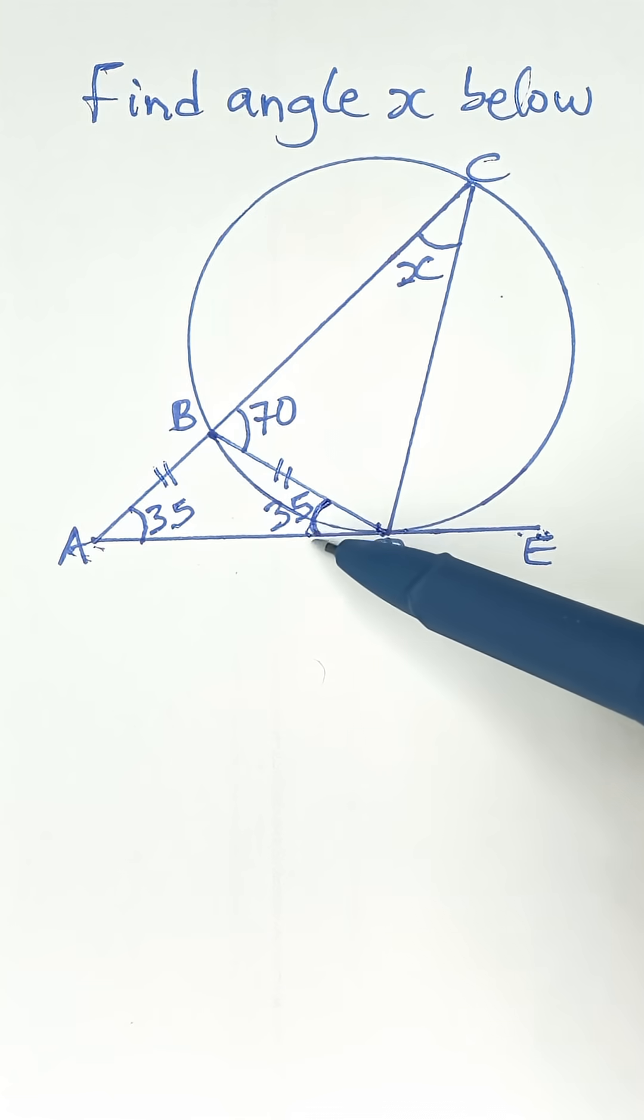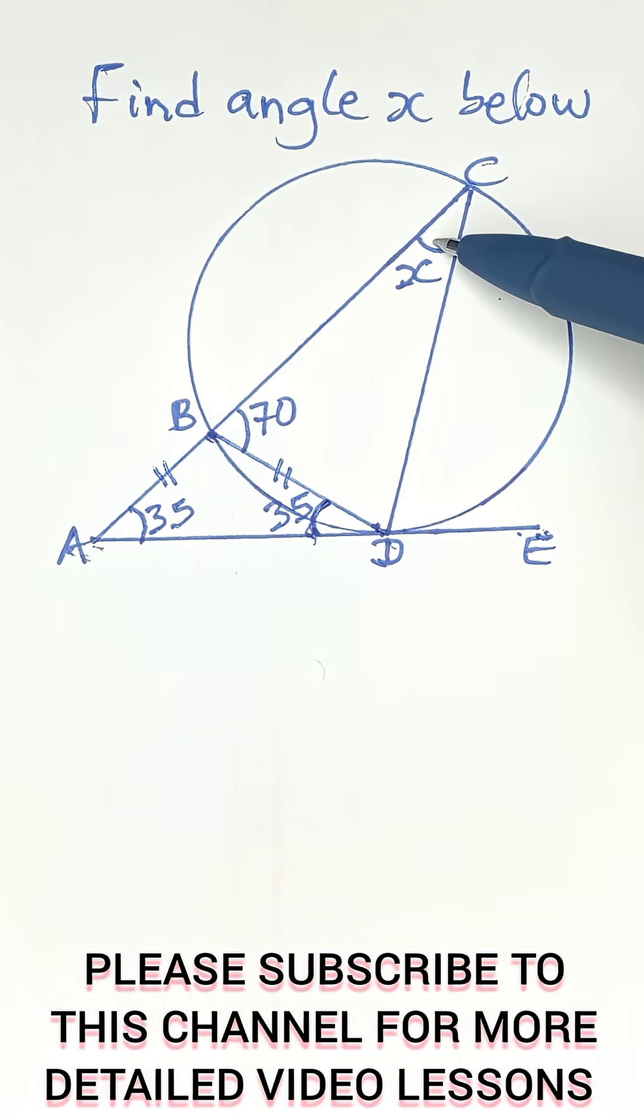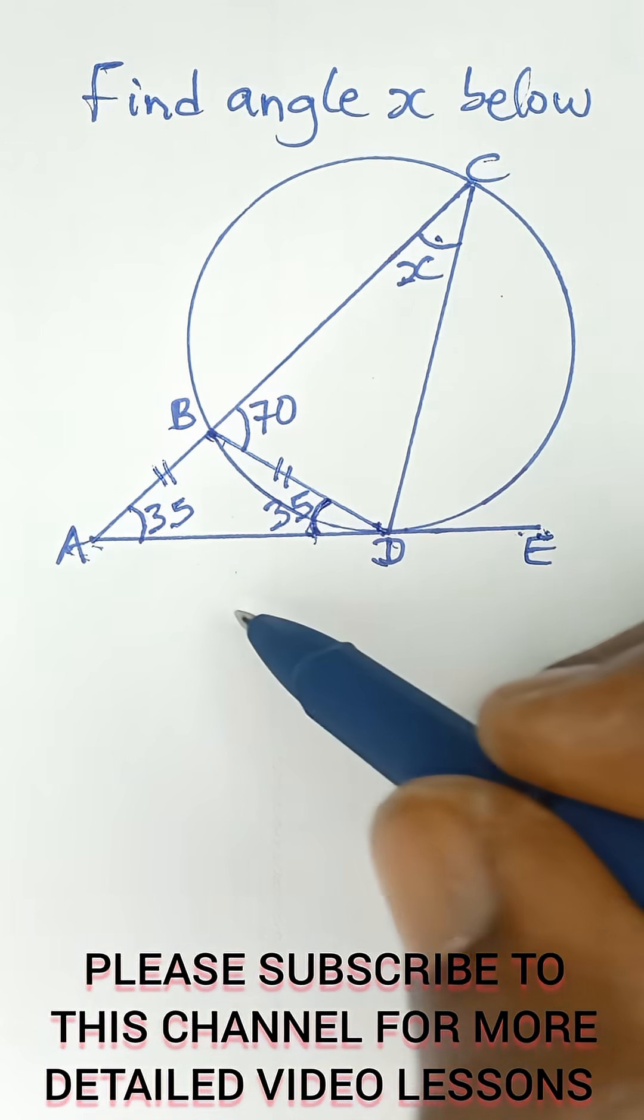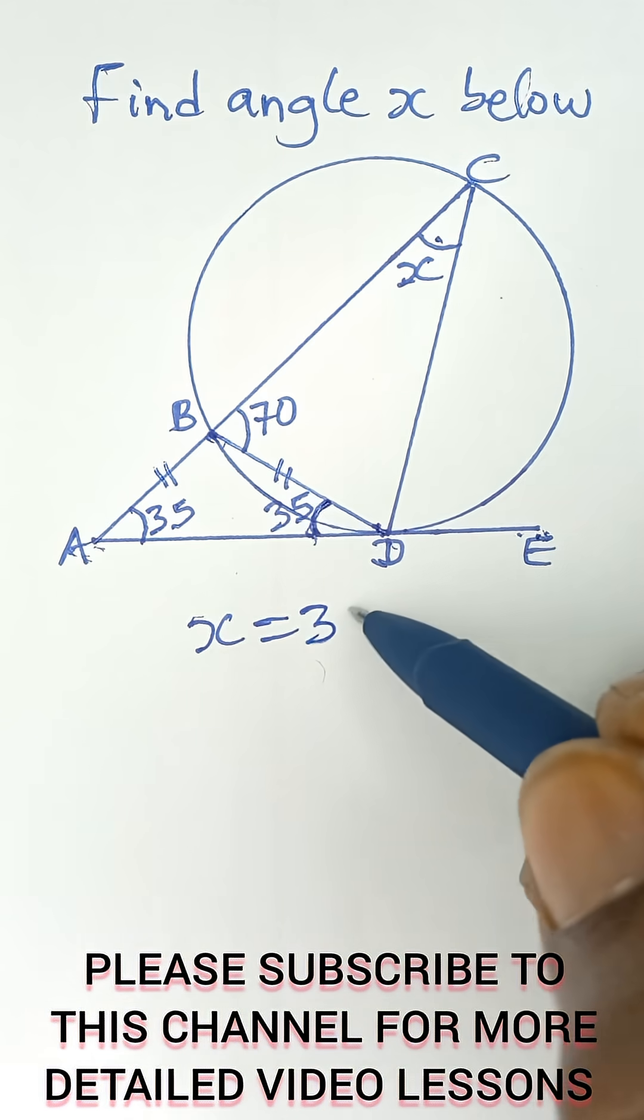So we can simply say X equals 35. The reason is that angles in alternate segments are equal. This 35-degree angle is in alternate segments to angle X.